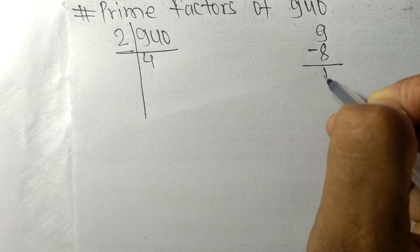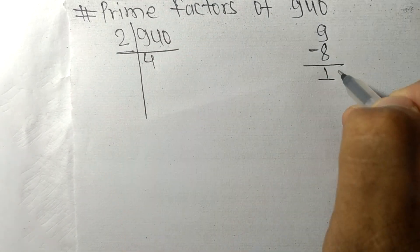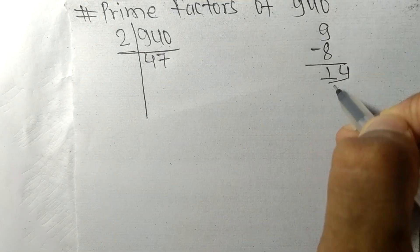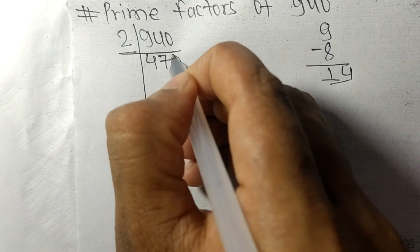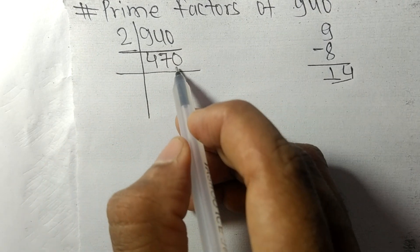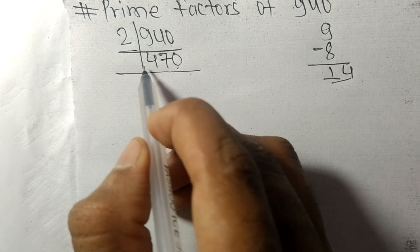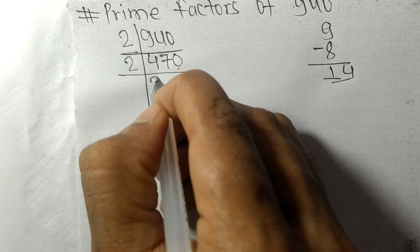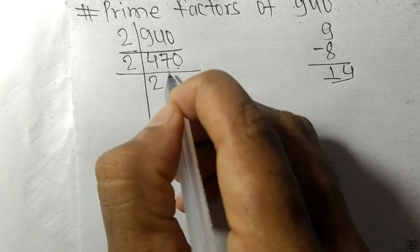On subtracting we get 1, this 4, 14. 2 times 7 means 14. 2 times 0 means 0. Again it has 0 at the last so it is exactly divisible by 2.